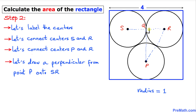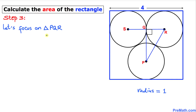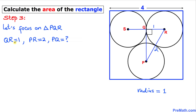Here is the diagram with centers S, R, and P, where Q is the foot of the perpendicular on segment SR. Now let's focus on triangle PQR. The radius of the right circle and the radius of the bottom circle are each 1, so QR = 1. Since PR connects two circle centers each of radius 1, PR = 1 + 1 = 2.